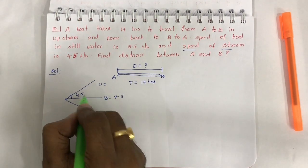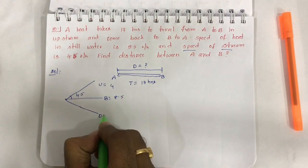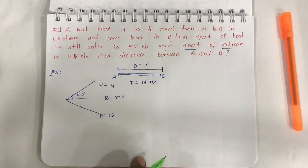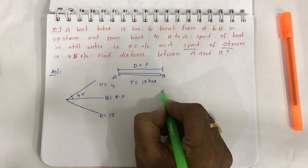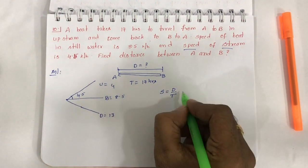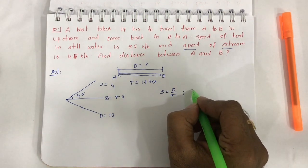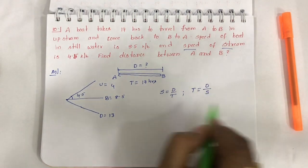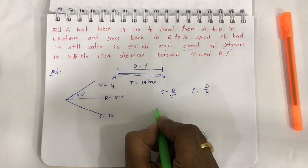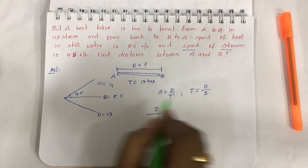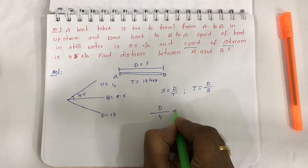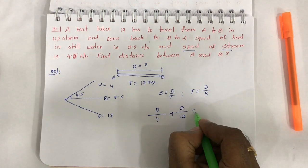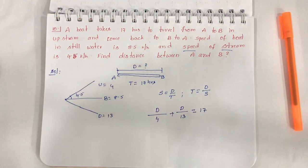A boat takes 17 hours to travel from A to B in upstream and come back to B to A. Speed of boat in still water is 8.5 and speed of stream is 4.5. Find distance between A and B. So we need to find the distance between A and B. Total time is 17 hours. Total journey downward and upward takes 17 hours.